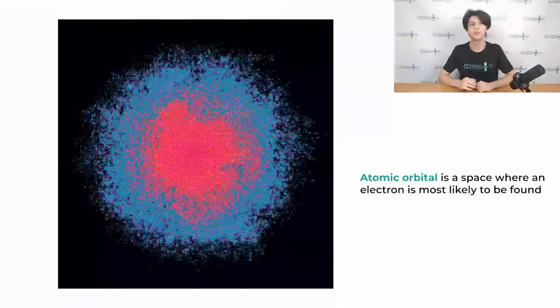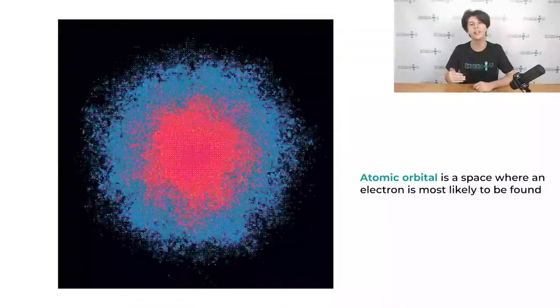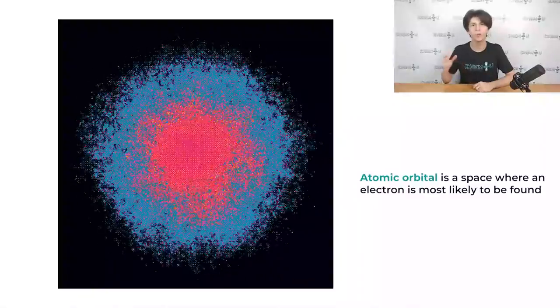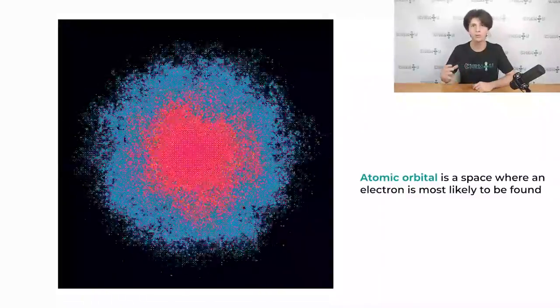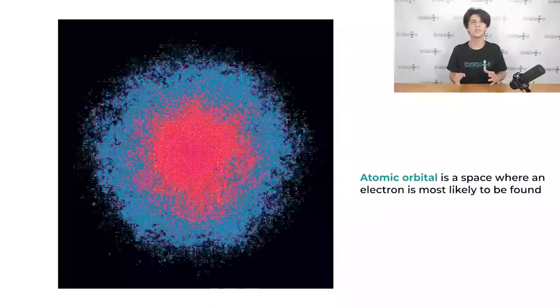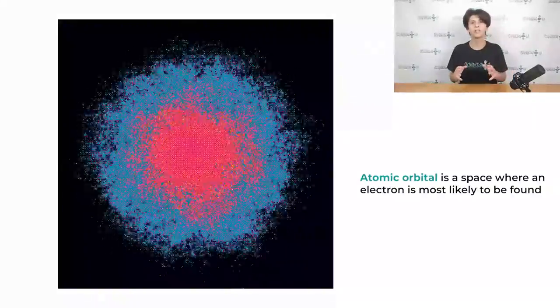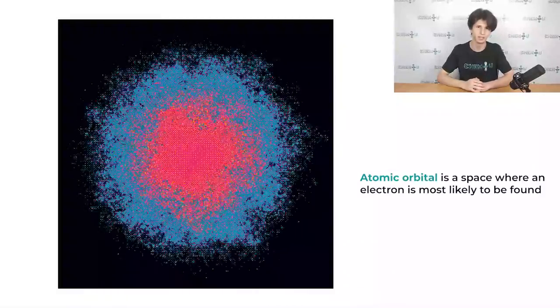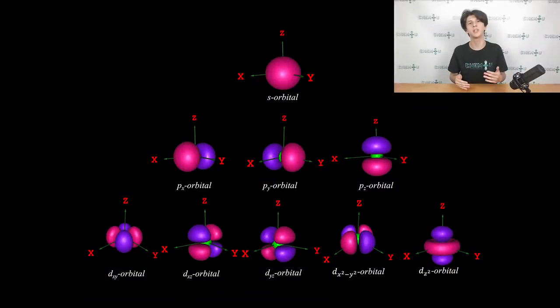As you can see, the probability to find an electron is very high near the nucleus, and the farther we move away from it, the lower the probability of finding an electron. But these animations don't tell the whole story, so we will look at some other ways to depict orbitals. One of the most efficient ways to represent the area in which the probability to find an electron is high is the orbital. Of course, the shapes of an atomic orbital are determined by wave functions.